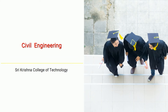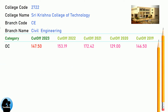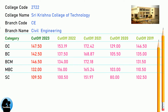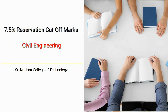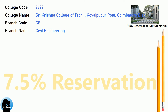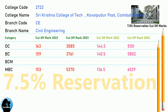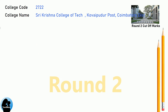DNA Cut-off for Shri Krishna College of Technology in Civil Engineering. DNA 7.5 Reservation Cut-off for Shri Krishna College of Technology in Civil Engineering. BNEA Round 2 Cut-off for Shri Krishna College of Technology in Civil Engineering.